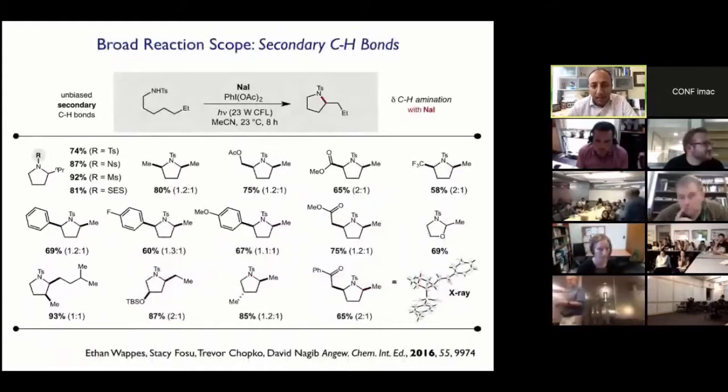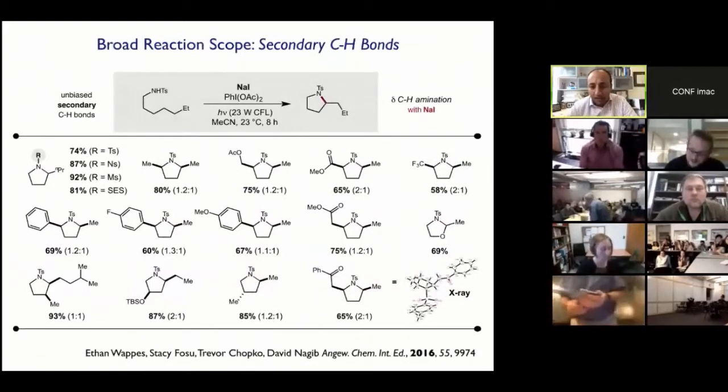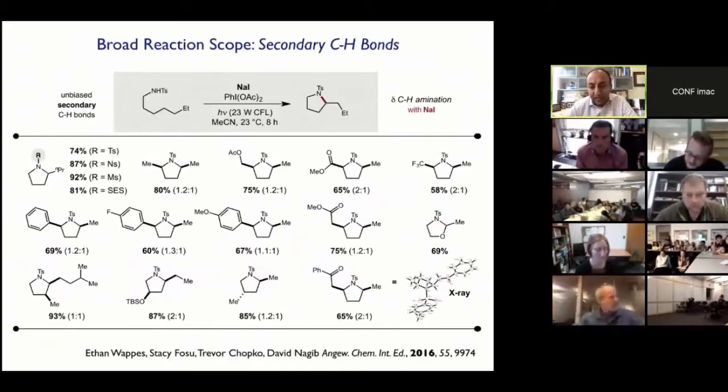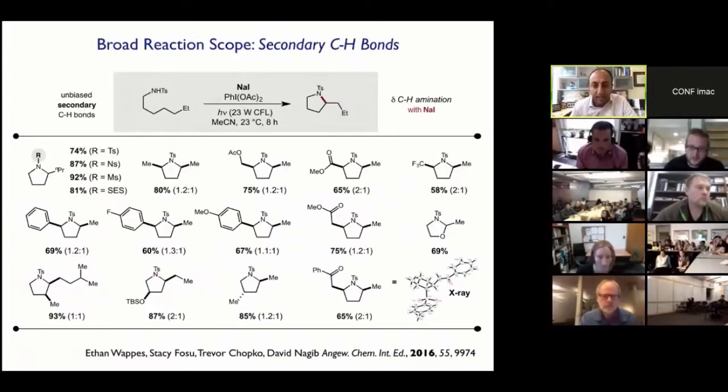And so this chemistry is broadly useful. So on this slide, we have demonstrated the C-H functionalization of secondary C-H bonds on the right, tolerating a variety of functional groups on the left-hand side. And my understanding is that there are at least two companies in the medicinal chemistry realm who've been using this as a unique method of synthesizing pyrrolidines from secondary C-H bonds.